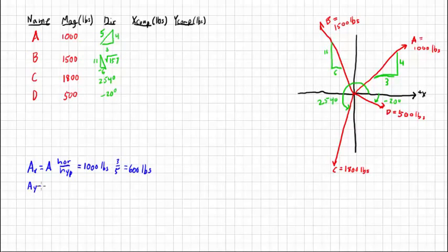AY would be A times the vertical over the hypotenuse, 1,000 pounds times 4 over 5 equals 800 pounds.